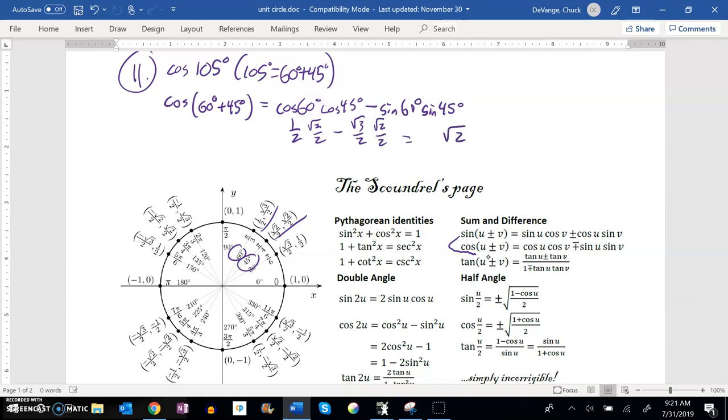And that would mean I'd have root 2 minus root 6, and the whole thing's over 4. And I can check it on my calculator: insert cosine 105 degrees, insert this, make sure they give me the same decimal approximation.